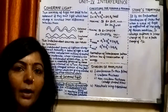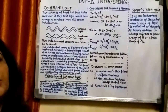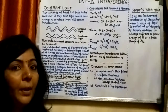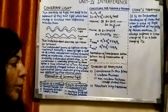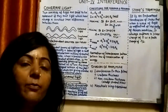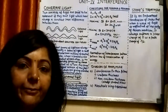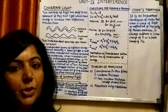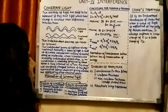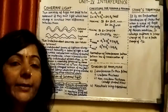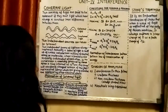Hello everyone. Today we are going to start our unit number 4. In unit number 4 we have two parts: the first one is interference and the second one is diffraction. So we are going to start with the first part, that is interference.